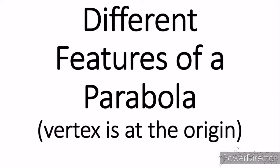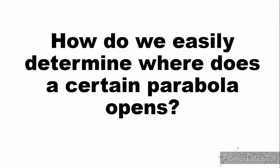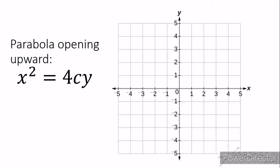Today we are looking at different features of a parabola where the vertex is at the origin. There are different features of a parabola — we have a parabola that opens upward, downward, to the left, and to the right. But how do we easily determine where a certain parabola opens? That is what we are going to talk about right now. So, let's start!